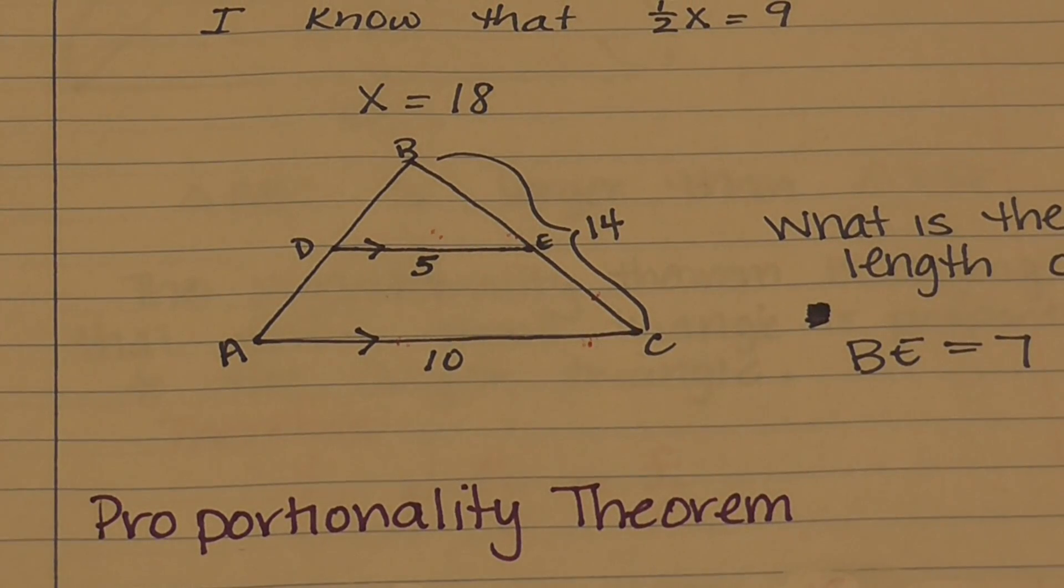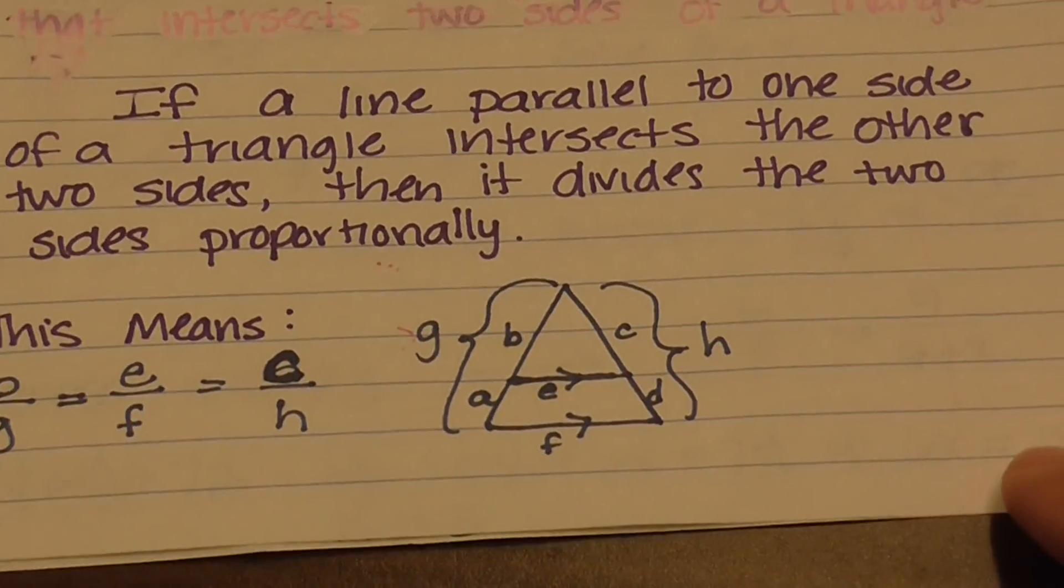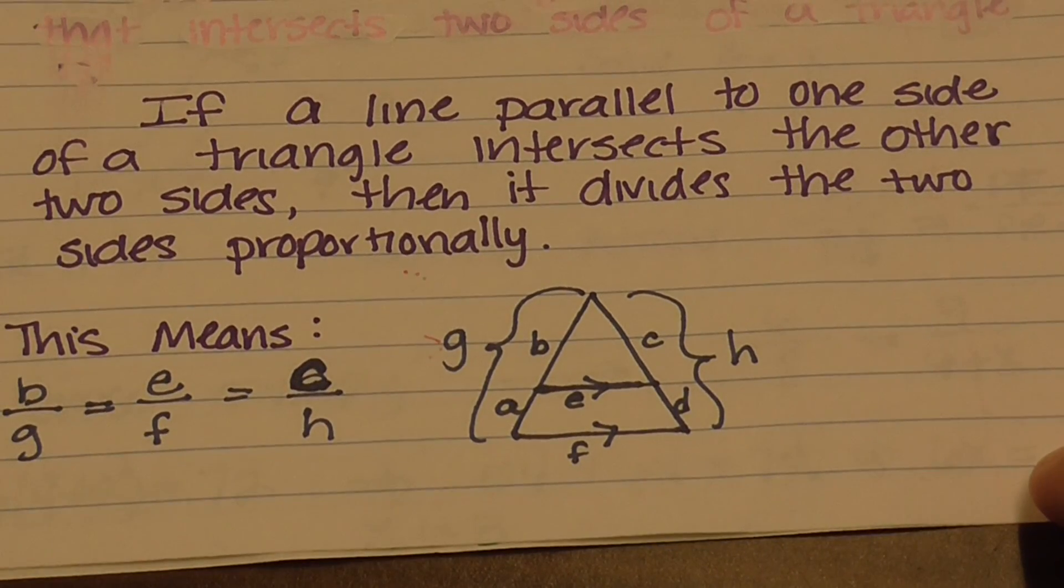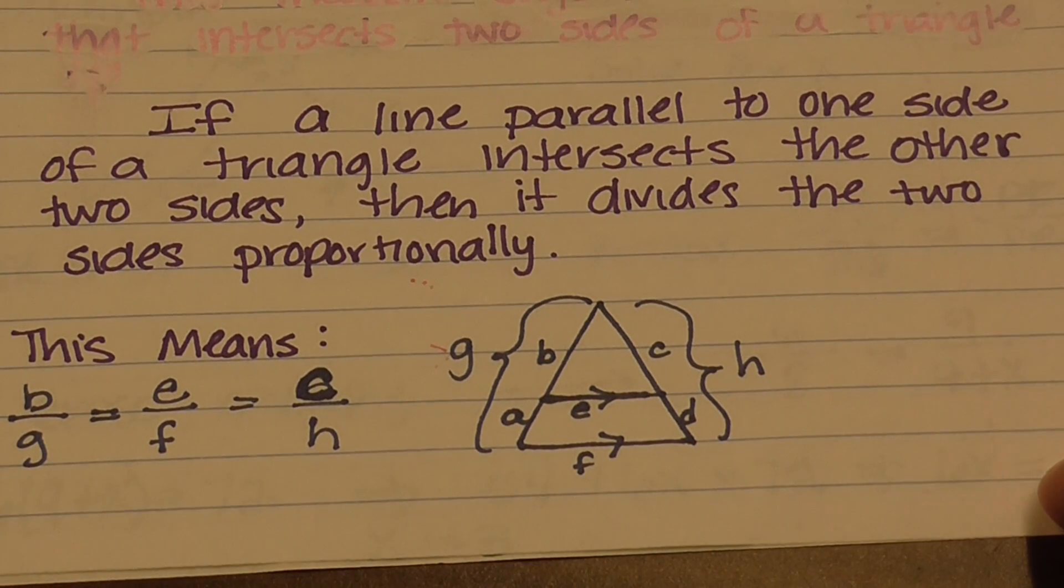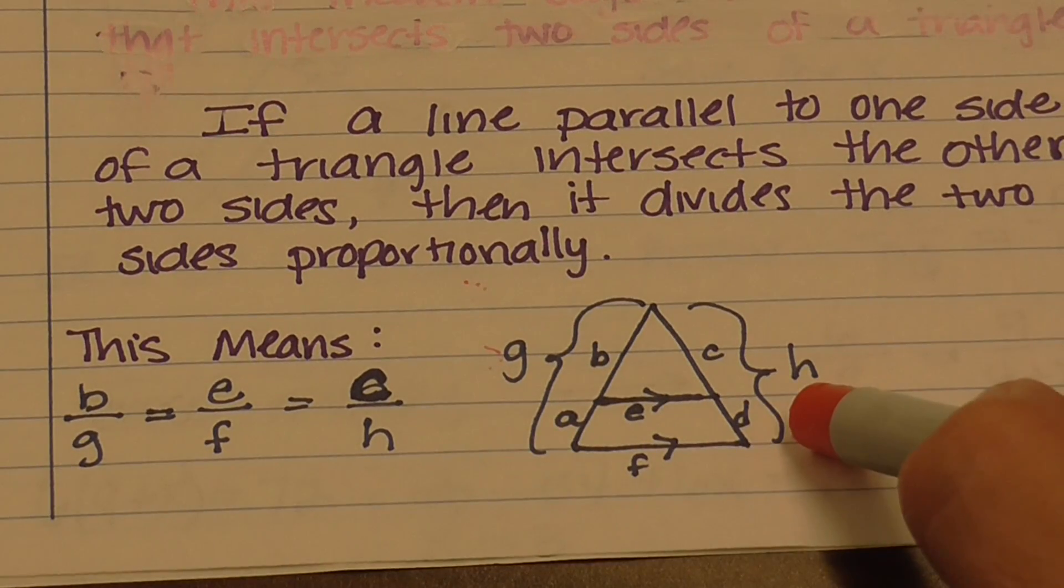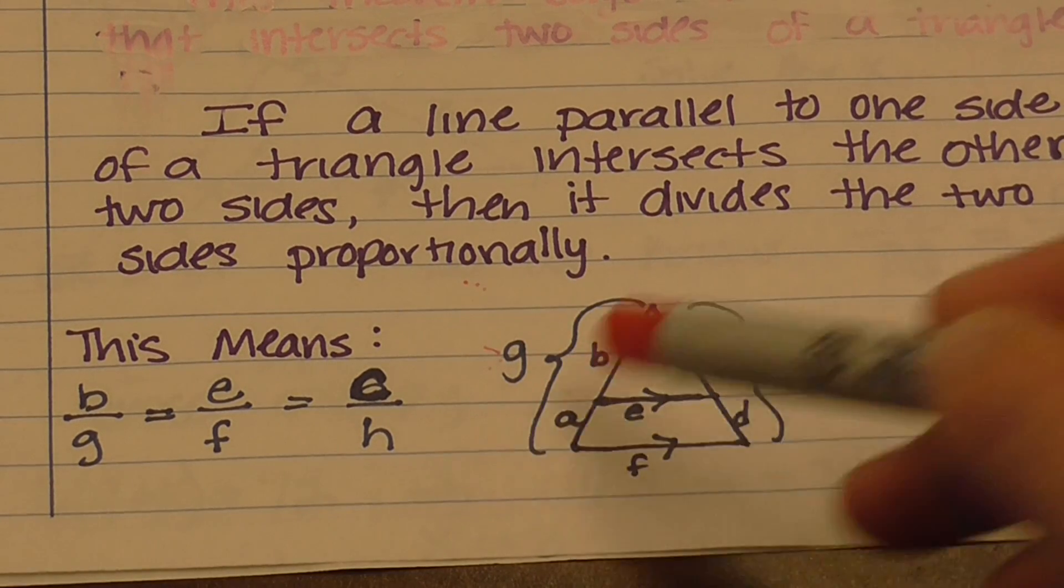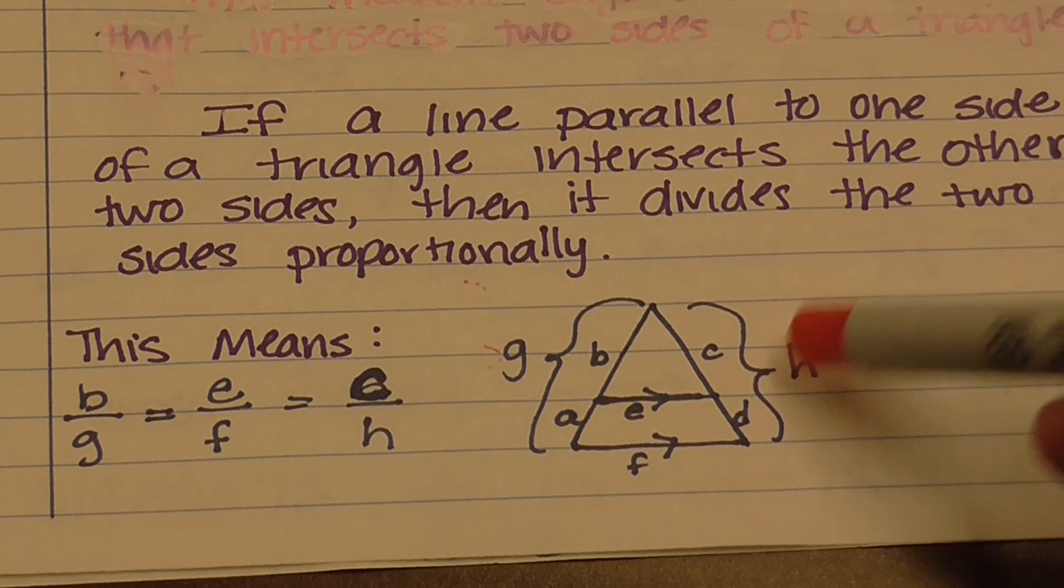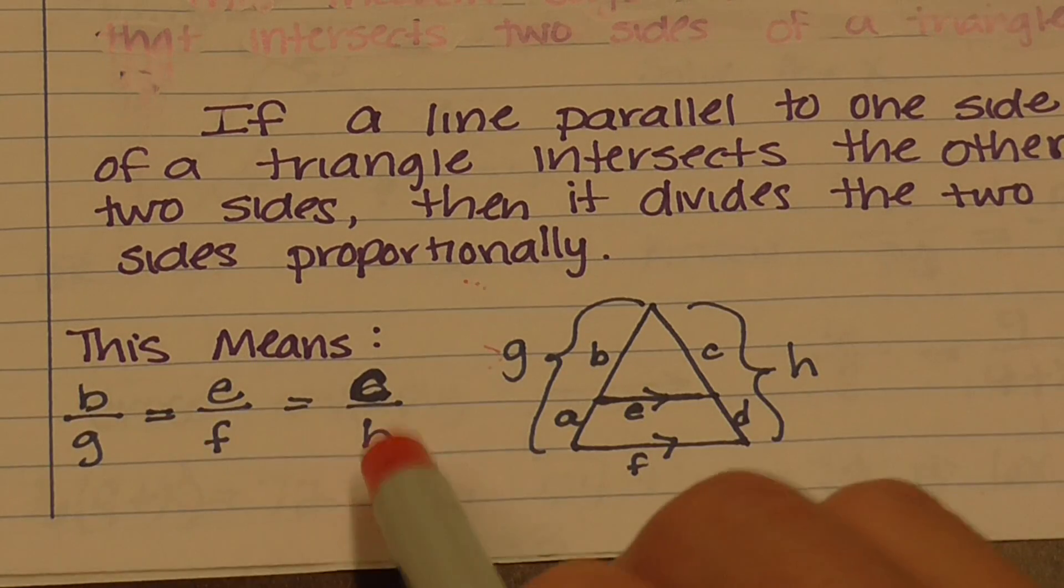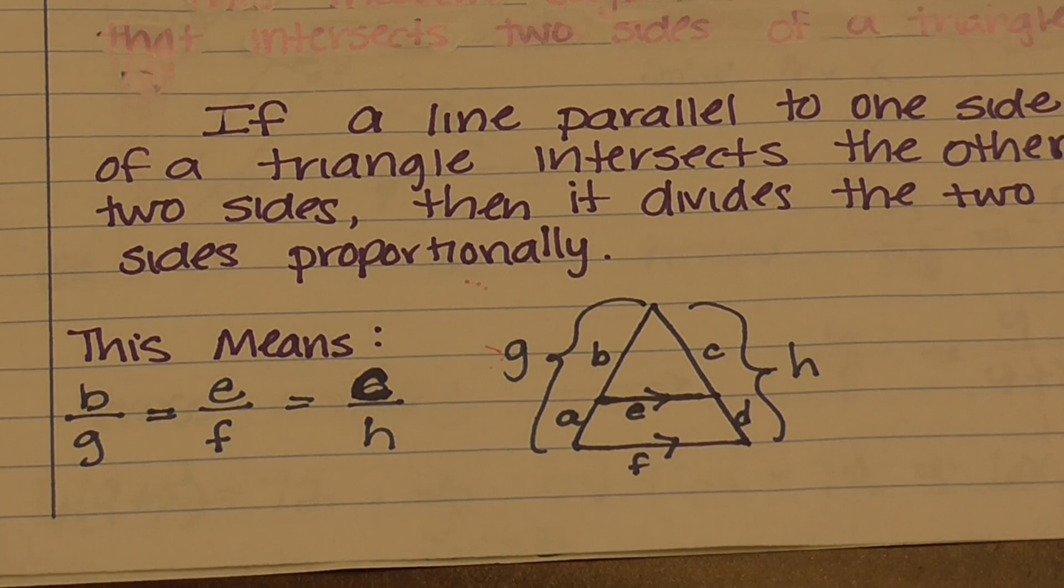The next theorem we're going to talk about is the proportionality theorem. If a line is parallel to one side of a triangle and intersects the other two sides, then it divides the two sides proportionally. This means, given this triangle here, that B to G has the same proportion as C to H, which has the same proportion as E to F. I wrote them in a different order, but they're all exactly the same. They make the same ratio.